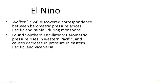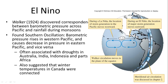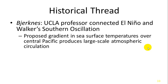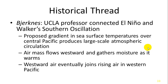Walker showed a roughly seven-year pattern often associated with droughts in Australia, India, Indonesia, and parts of Africa, and suggested winter temperatures in Canada were connected — demonstrating how global weather patterns change with shifts in water temperature across the Pacific Ocean. A UCLA professor connected El Niño and Walker's southern oscillation by proposing that a gradient in sea surface temperatures produces large-scale atmospheric circulation. As surface water temperatures change, air mass flows westward, gathers moisture as it warms, and eventually joins rising air in the western Pacific, causing precipitation events.